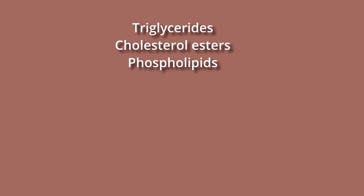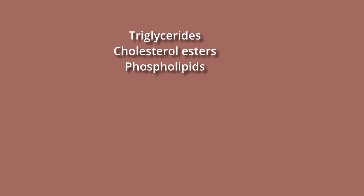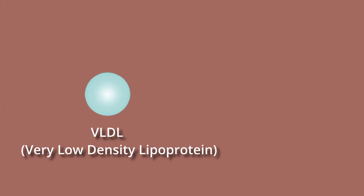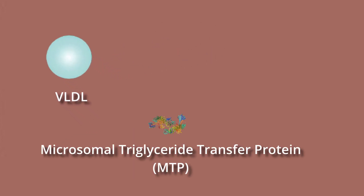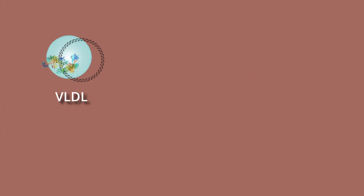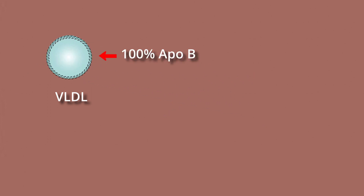The liver packs triglycerides, cholesterol, and other lipids into VLDL with the help of MTP, with the protein ApoB100, containing 100% protein coated by the ApoB gene.